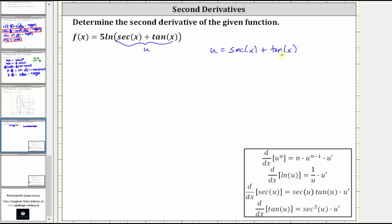So if u is equal to secant x plus tangent x, we can think of the original function as just five natural log u. And now we need to find u prime or du dx, where u prime is equal to the derivative of secant x plus tangent x. The derivative of secant x is secant x times tangent x plus the derivative of tangent x is equal to secant squared x.